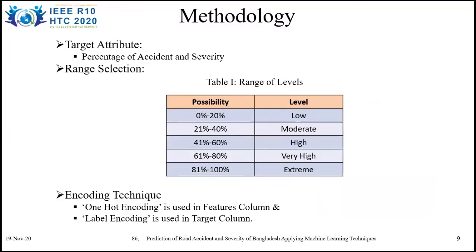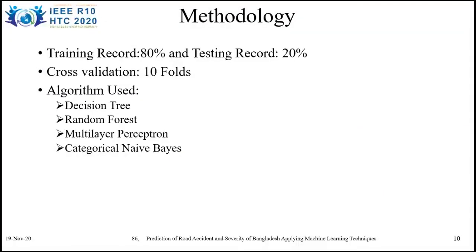After pre-processing and measuring the Euclidean distance, we found a table of percentage measurements of accident and severity. To classify the percentage result and understand the level of severity, we classified the data based on ranges, with each class having a 20% difference. Based on the possibilities, there are five total classes: low, moderate, high, very high, and extreme. As our inputs were string type, we used one-hot encoding to identify each feature with a unique number, and label encoding was used in the target column. The main dataset was split into 80% training and 20% testing.